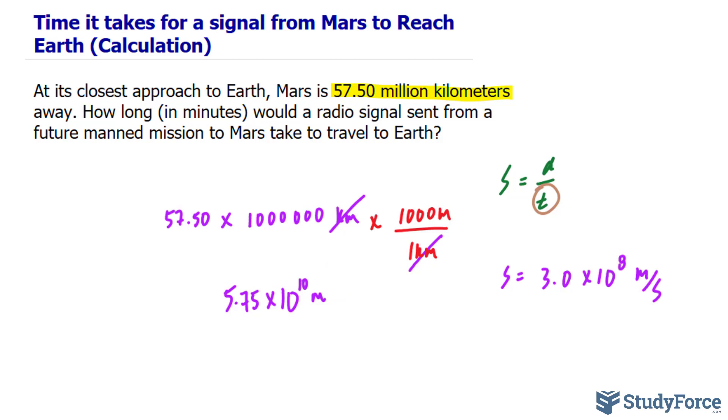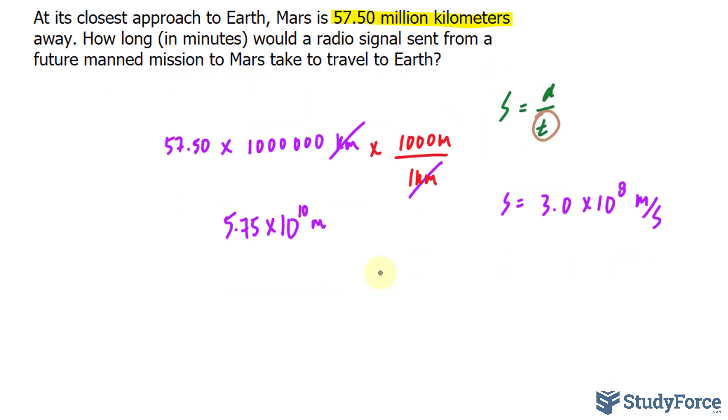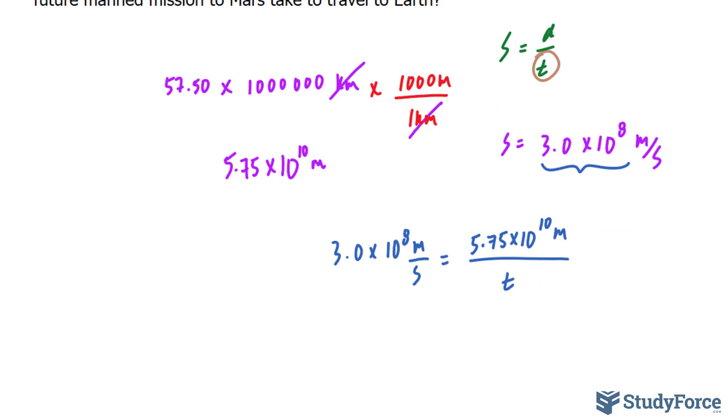All right. Now, we will substitute everything we know into our formula that's in green. We have this value as S. Our distance is 5.7 times 10 to the power of 10 meters. And the time is what's unknown, and it's at the bottom. So we do have to apply a little bit of algebra to isolate for T. And this involves multiplying both sides by T. That will cancel the T's on the right side, and we'll have a factor of T on the left side.